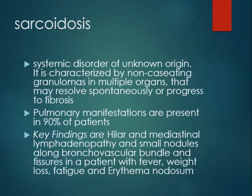The key findings are bilateral, symmetrical hilar lymphadenopathy, and small nodules along the bronchovascular bundles and fissures in patients with constitutional symptoms — meaning fever, weight loss, fatigue, erythema nodosum, and things like that. There is also elevated ACE (angiotensin-converting enzyme) level in sarcoidosis cases.